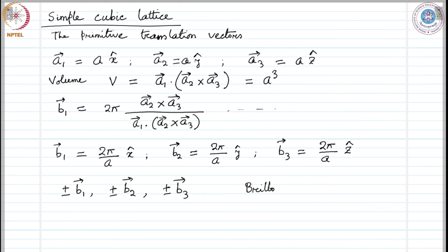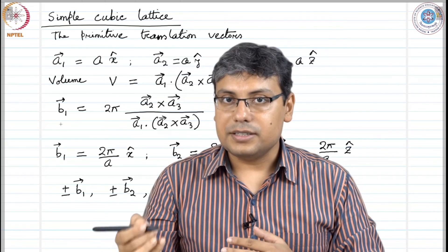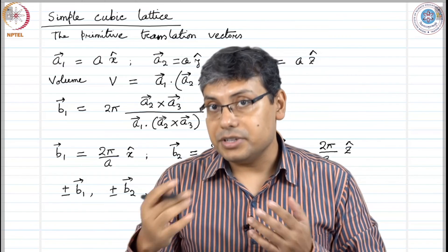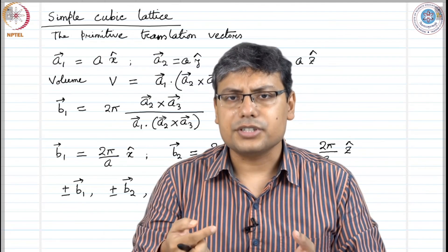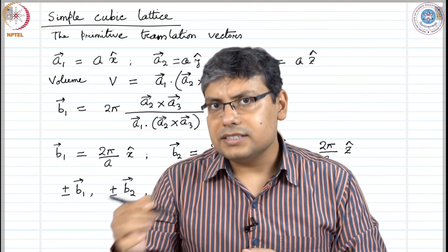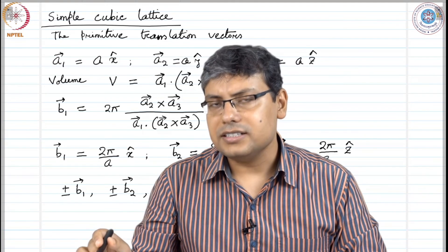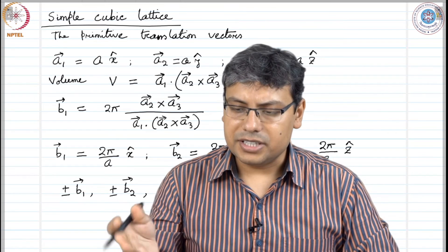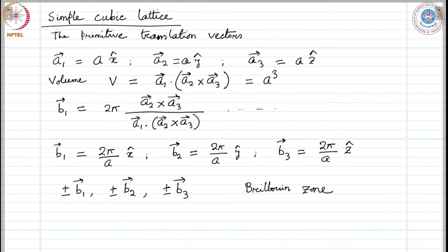We can clearly see that. What would be the volume of the primitive unit cell in reciprocal space? The unit cell formed using vectors b1, b2, and b3 is a primitive unit cell in the reciprocal lattice. Also, the Brillouin zone is a primitive unit cell in the reciprocal lattice — these are just two different descriptions of the primitive unit cell. The Brillouin zone is like the Wigner-Seitz cell, while the primitive lattice vectors give the usual cell analogous to those in real space. The volume of the reciprocal cell is (2π/a) cubed.